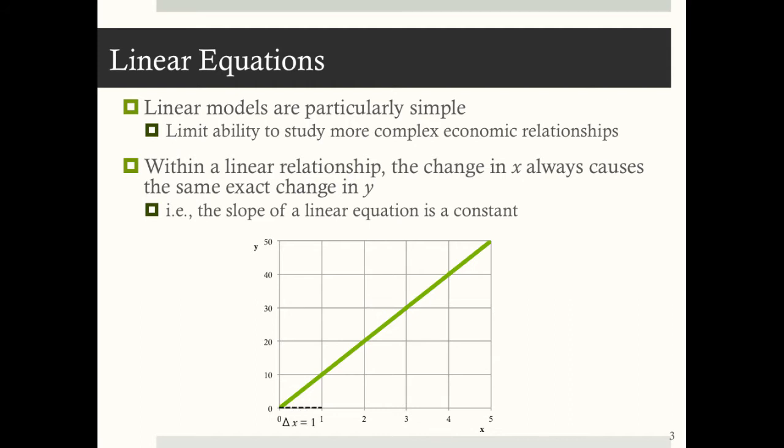For example, in this graph, when we increase x from 0 to 1, y increases by 10. When we increase x from 1 to 2, y increases by 10. And when we increase x from 2 to 3, y increases by 10. The slope is exactly the same along this entire line. In this case, it's equal to 10.